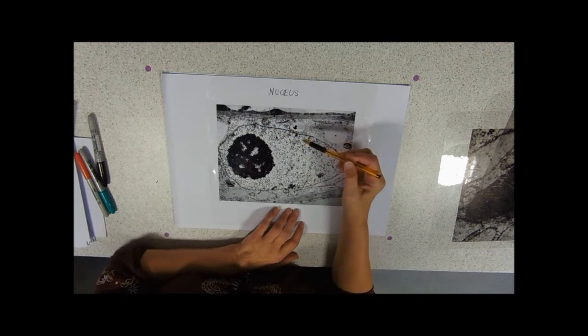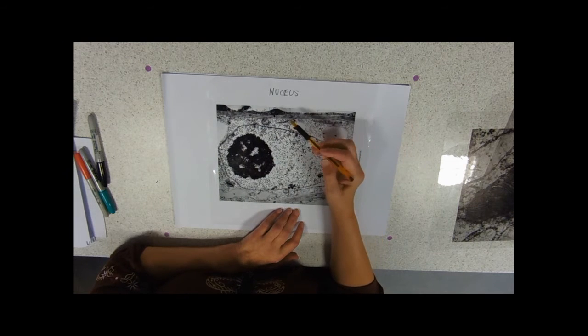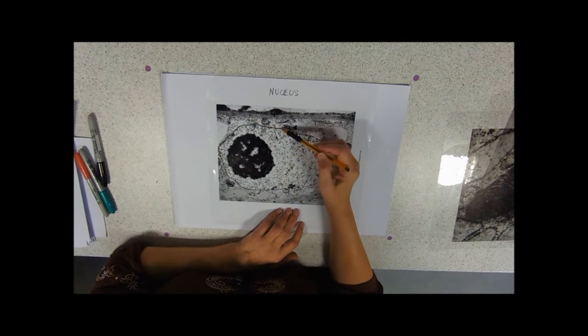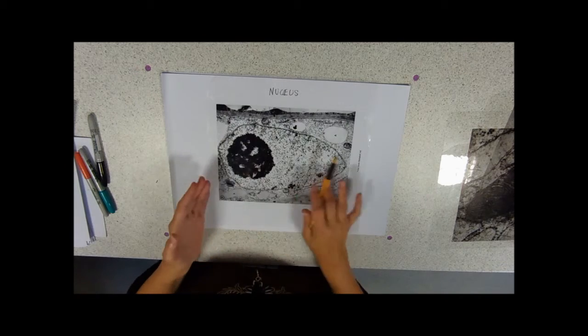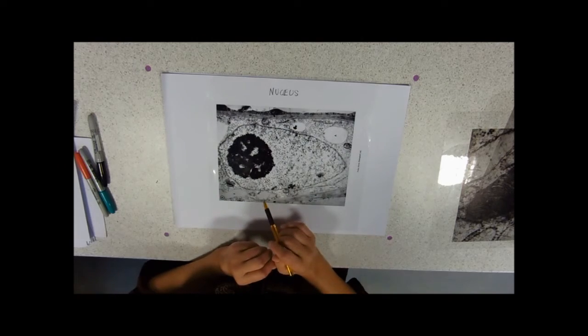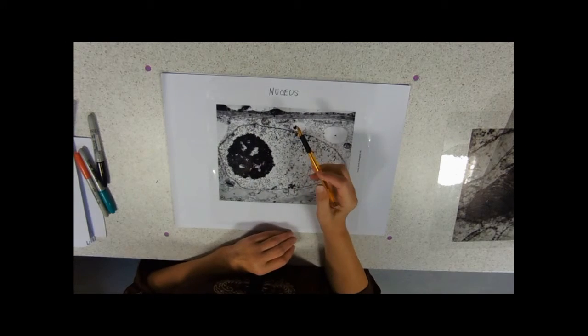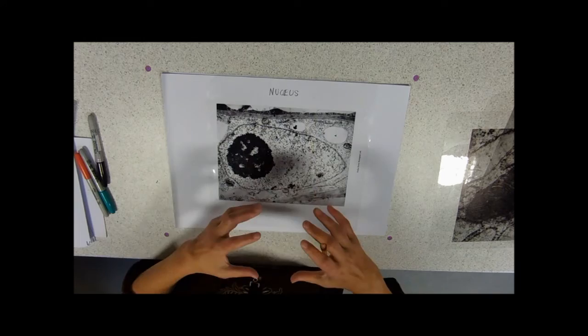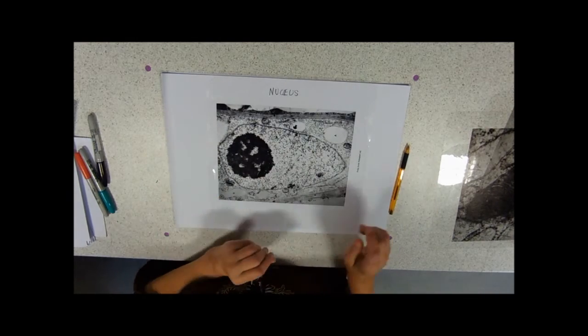This double membrane we call the nuclear envelope—belonging to the nucleus, nuclear. And it contains little holes through it. So if you imagine the nucleus was kind of more or less spherical, this doesn't look spherical because of the way it's being cut. It's being cut across so it looks like an oval, and it's two membranes, so it's sort of a ball shape, two membranes.